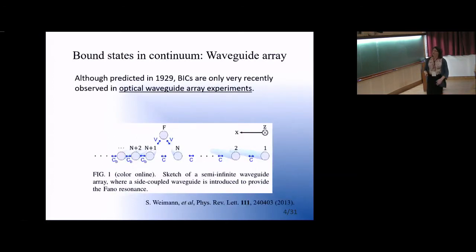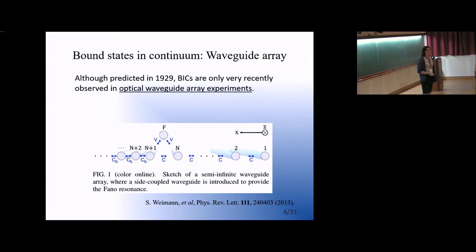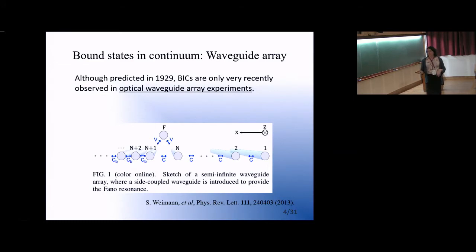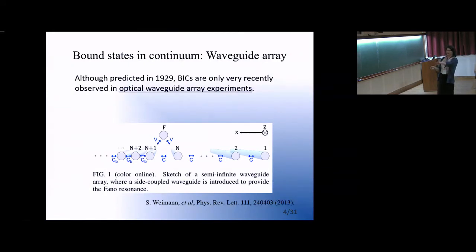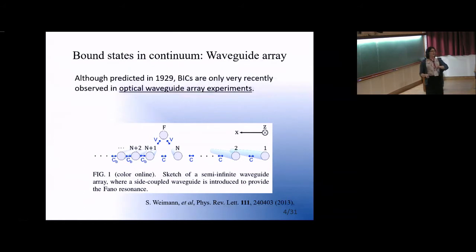While we don't yet have unambiguous detection in a quantum system, BICs have been observed quite recently in optical waveguide array experiments, which function as a very useful analogy for true quantum systems. In the experiment by Wyman et al., they construct a semi-infinite waveguide array — with a very large number of elements to the left. A photonic excitation in one waveguide can excite its neighboring waveguide, allowing tunneling or an excitation that travels from one element to the nearest neighbor.